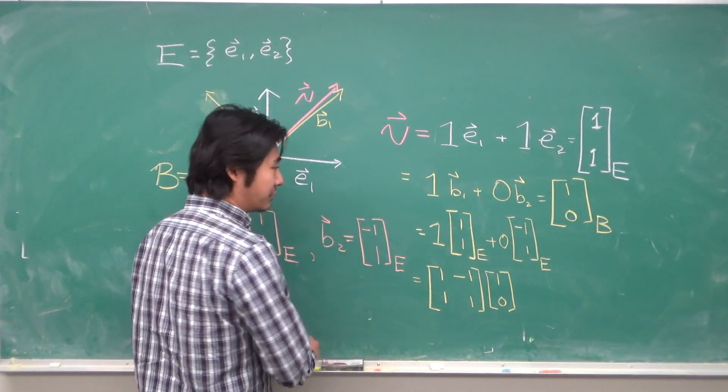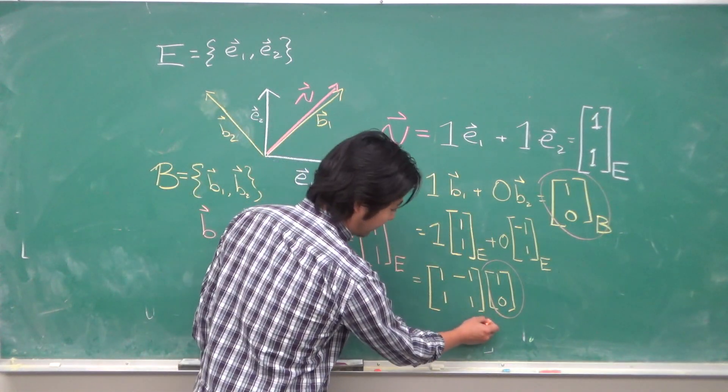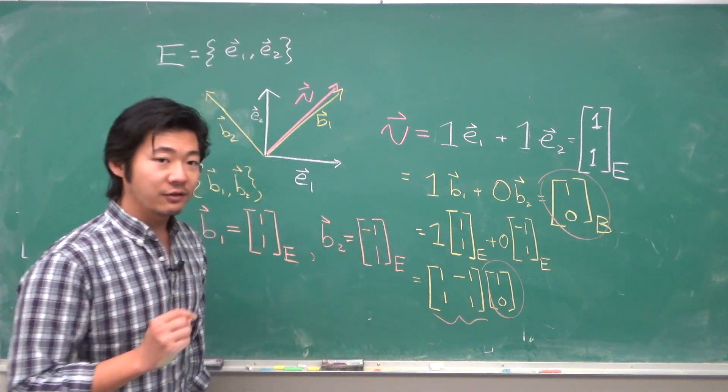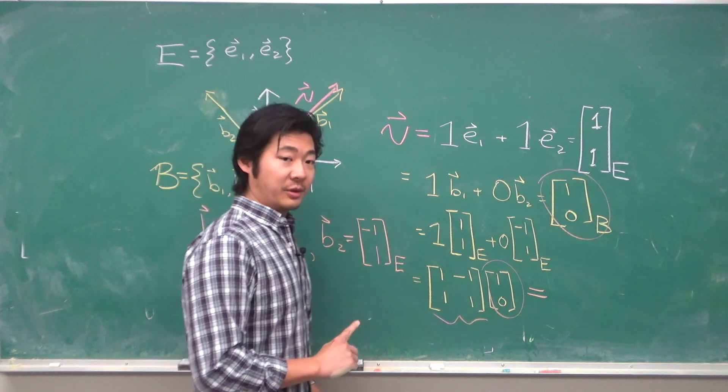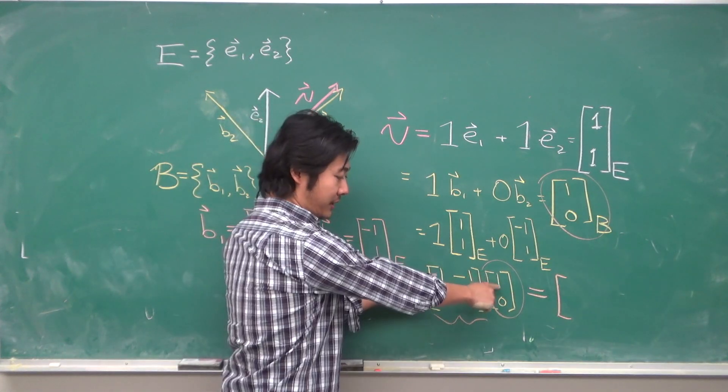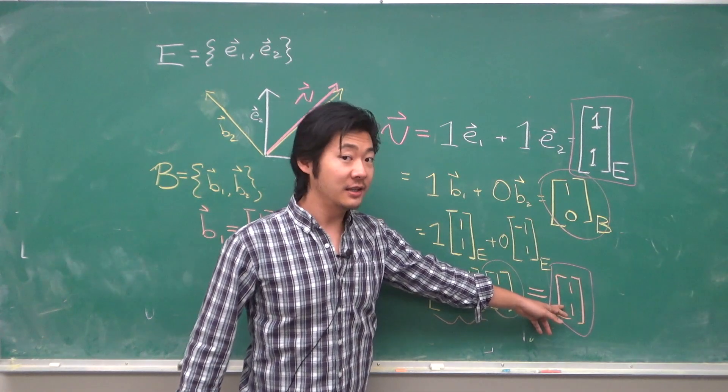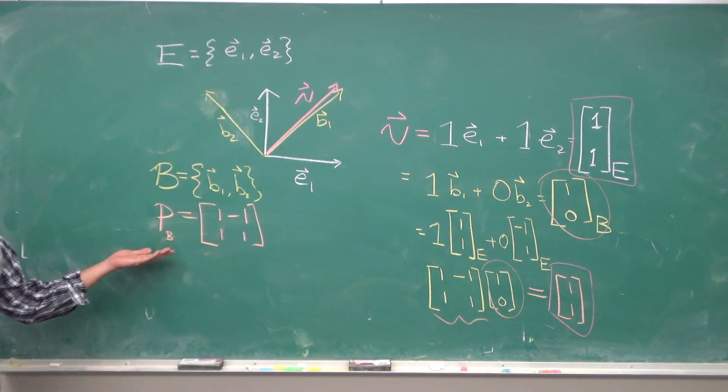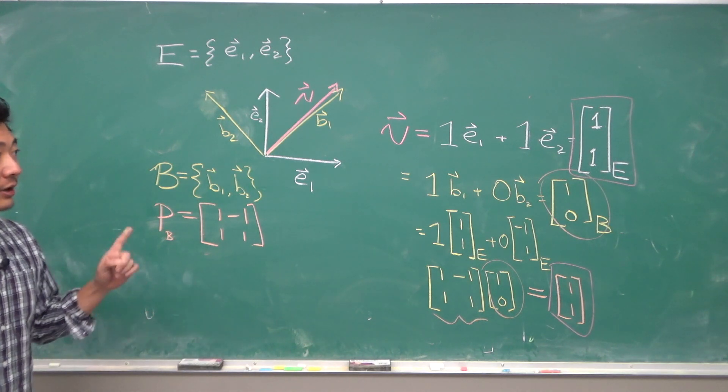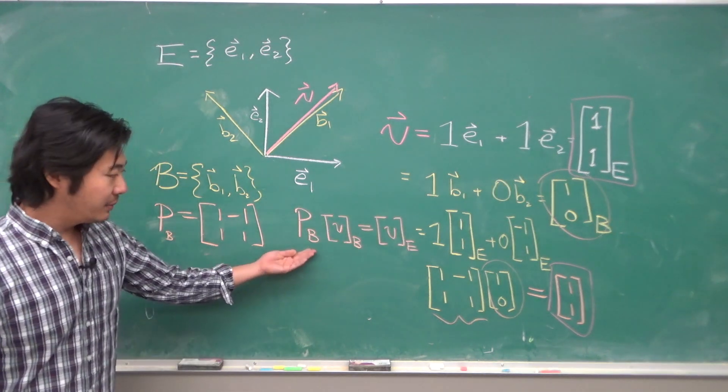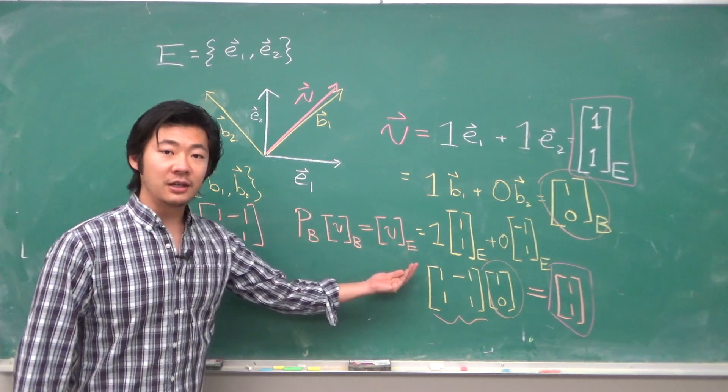And it's no coincidence that this and this are the same thing. What we have here is called the change of coordinate matrix, because what happens if we do matrix multiplication? We get 1 and 1, which is the same as writing it in the E coordinate. So, if we let P sub B be this matrix, then we can rewrite our equation as the matrix P sub B times the vector written in the B coordinate is equal to the vector in the E coordinate.